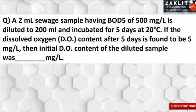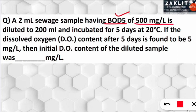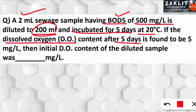The question is: 2 milliliters of sewage sample having a BOD5 (biochemical oxygen demand over 5 days) of 500 mg/L is diluted to 200 ml — meaning 2 ml of sewage sample and 198 ml of distilled water were added to make 200 ml. It is incubated for 5 days at 20°C. If the dissolved oxygen content after 5 days is found to be 5 mg/L, then what was the initial dissolved oxygen content of the diluted sample?